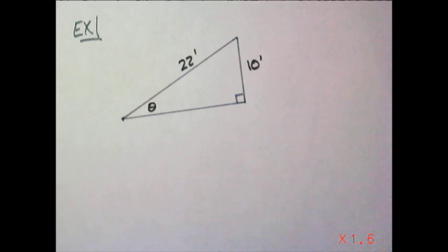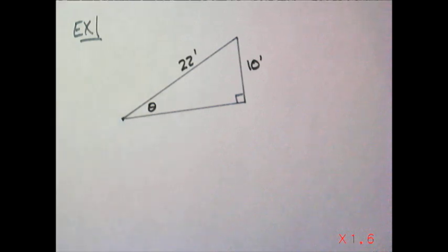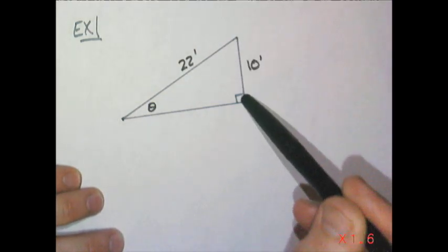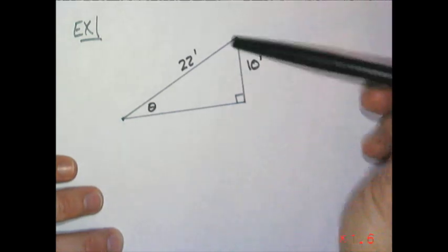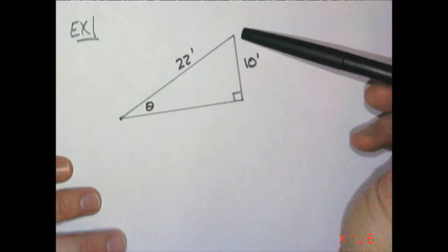Now, next example. The table can also help me when I know the lengths and I want to find the angle. I have a right triangle that is 10 foot on this side, 22 feet as the hypotenuse.